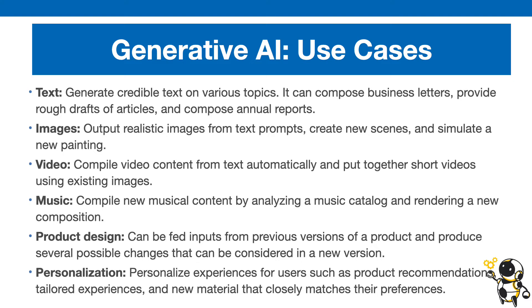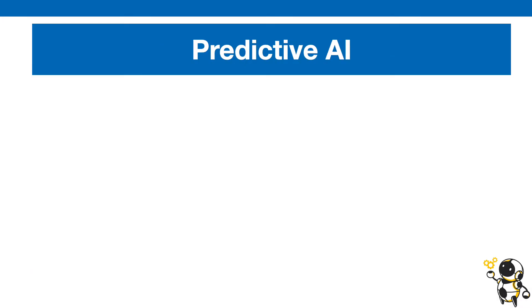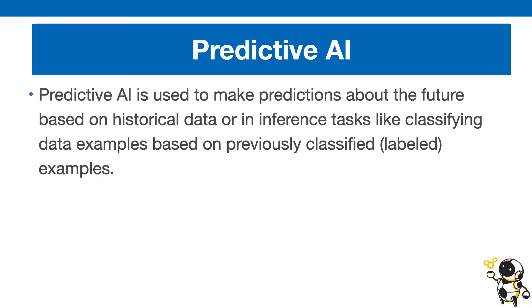Now that you understand what generative AI is, let's take a look at what predictive AI is. Predictive AI, like its name suggests, is going to make a prediction about the future based on historical data.